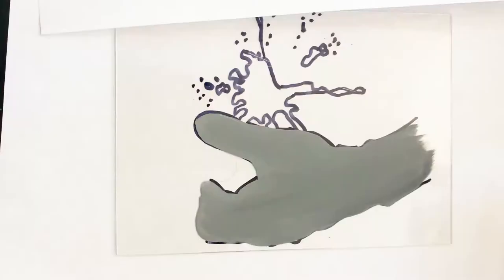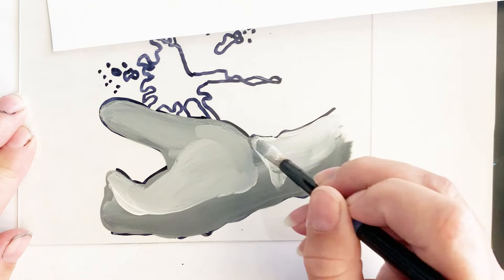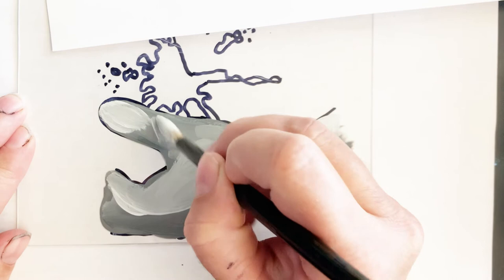Once my first layer dried then I went in and did some shading. So mine is a hand that's got a multicolored paint splatter hovering above it. I did the hand entirely black and white and then the paint splatter is gonna be color later on. And I'm not sure why I did it that way. I love it that way. I think it looks super cool.